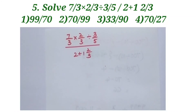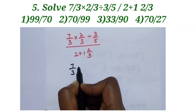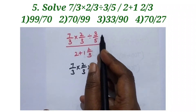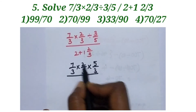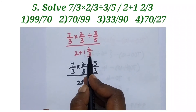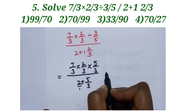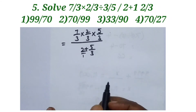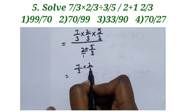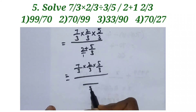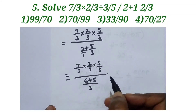Next question: 7/3 into 2/3 divided by 3/5 divided by 2 plus 1²/₃. First solve the division. Convert the mixed fraction 1²/₃: 3 plus 2 over 3 equals 5/3. Then the denominator becomes 5/3 divided by 2 plus 5/3, giving 11/3.